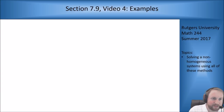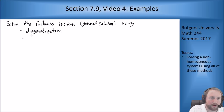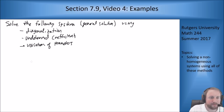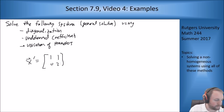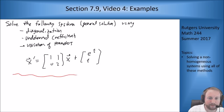So the example we're doing here is this one. I want to solve the following system in terms of a general solution using diagonalization, undetermined coefficients, and variation of parameters. The system is x' = [1,1; 0,2] x + [e^t; t]. This is the system we're going to solve by all these different methods.